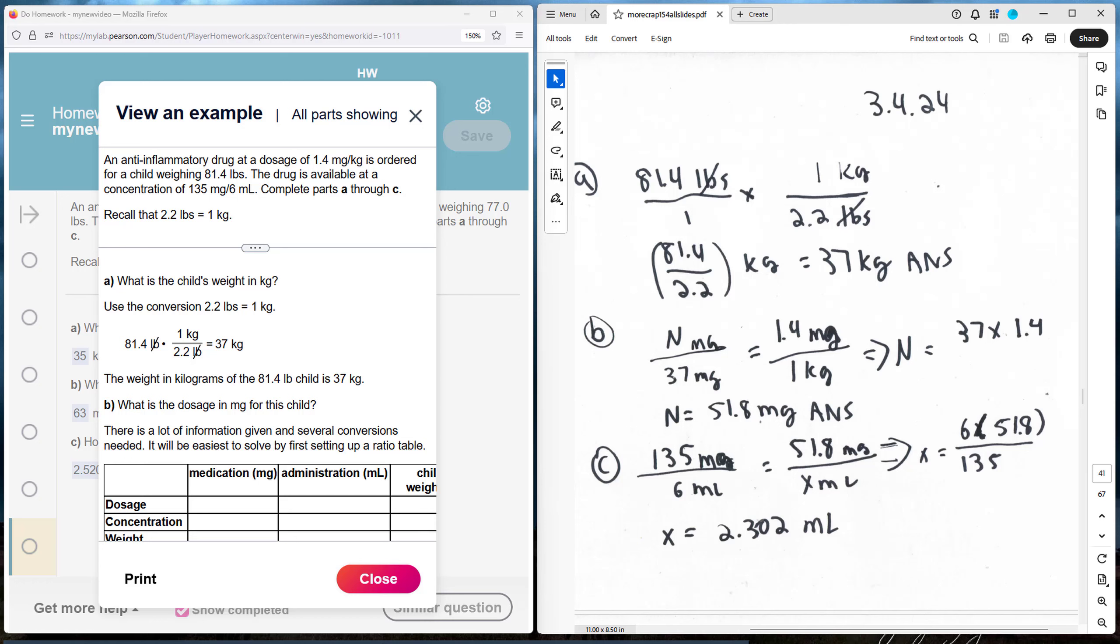Part B: What is the dosage for the child? So we know that the child weighs 37 kg, and we know that the child is going to need 1.4 mg of medication for every kg of weight.